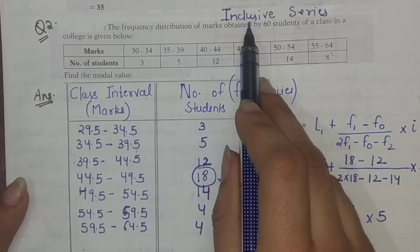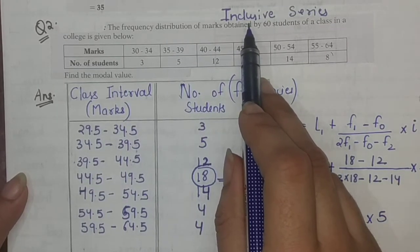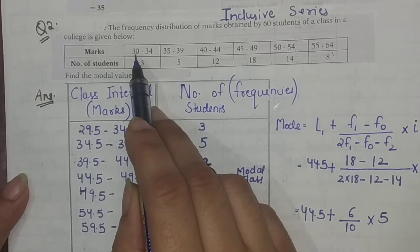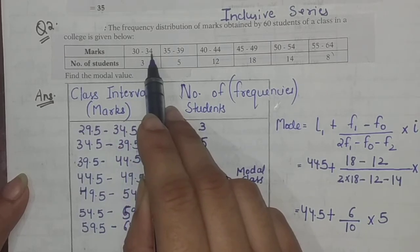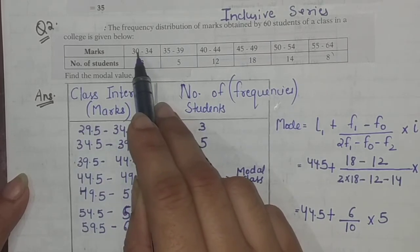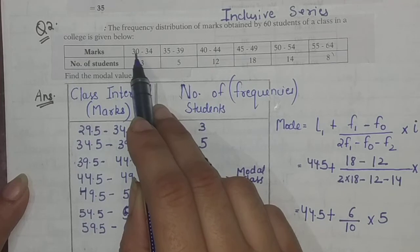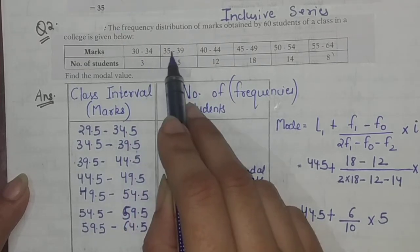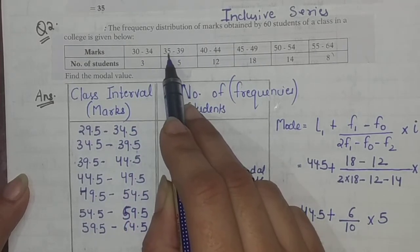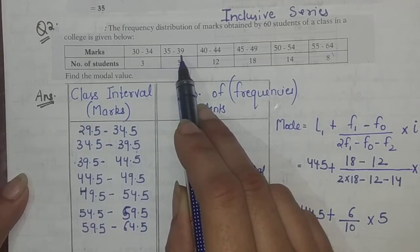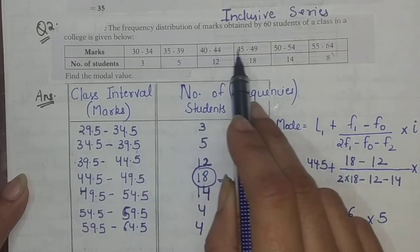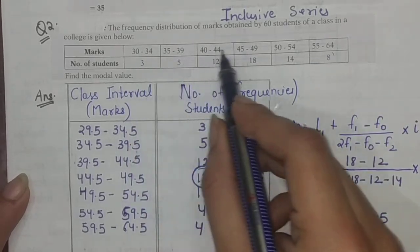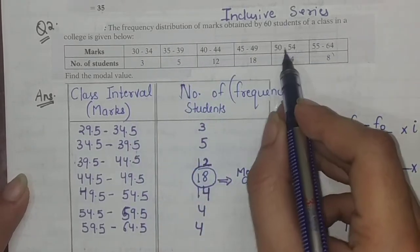There were two problems with this data. First, it was an inclusive series, so we had to convert it to an exclusive series — meaning we subtract 0.5 on the left side and add 0.5 on the right side. So 30 becomes 29.5 and 34 becomes 34.5; 35 becomes 34.5 and 39 becomes 39.5, and so on for every class interval.